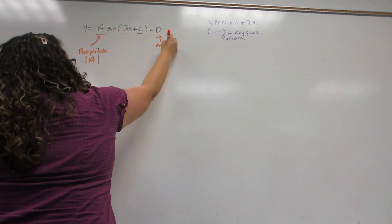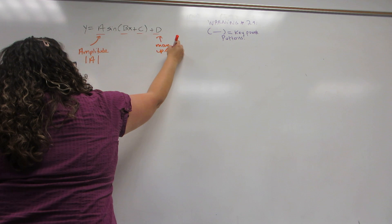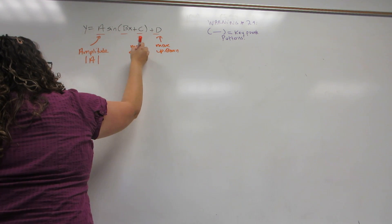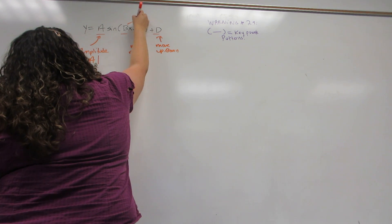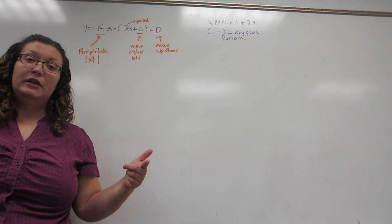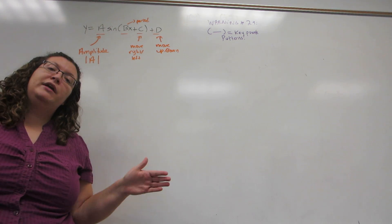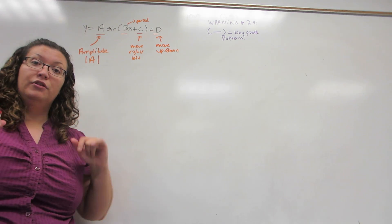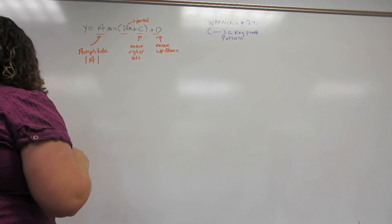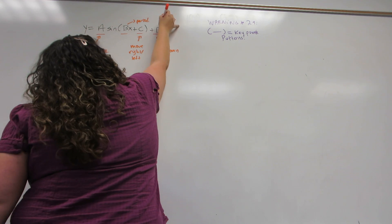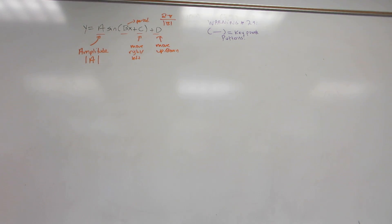D will move the entire graph up or down. C will move the entire graph right or left. And B will affect the period. The period is how often the graph repeats. In our graphs, we're only ever going to draw one period, because it will repeat from then on — so it's essentially telling you how wide the graph will end up being. The formula for period is 2π, which is the original period, divided by the absolute value of B. So the bigger B, the smaller the period will end up being.